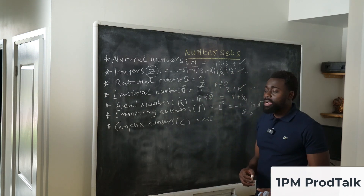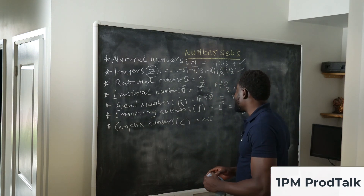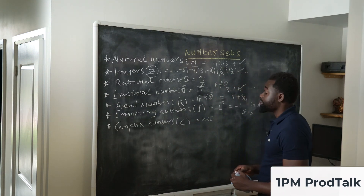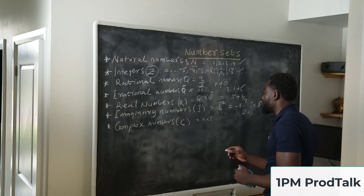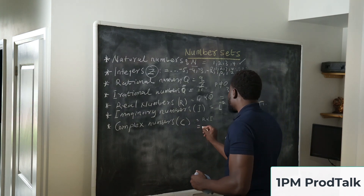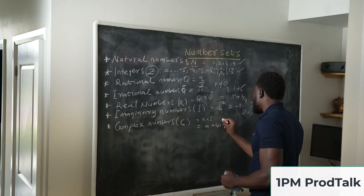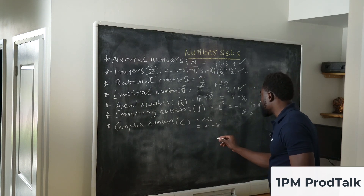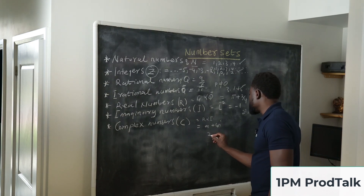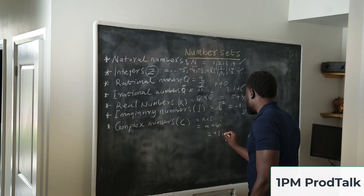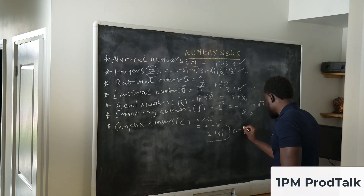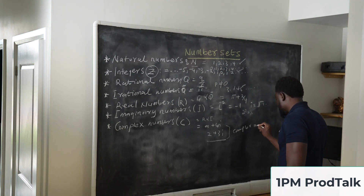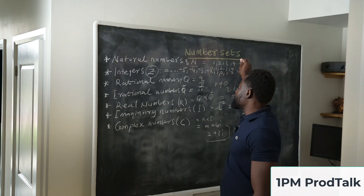The next thing is a complex number. The symbol is C. A complex number is a combination of real numbers plus imaginary numbers, written in the form A plus Bi. An example would be 2 plus 3i. That's it, folks, for number sets.